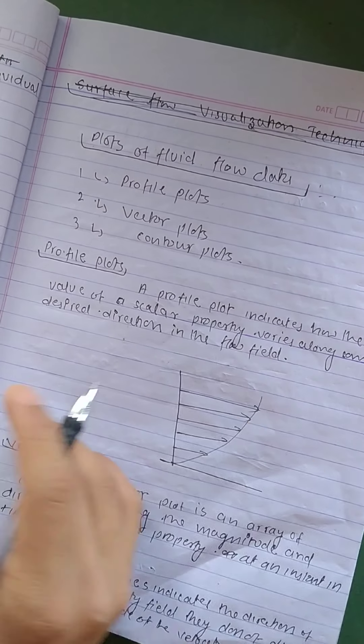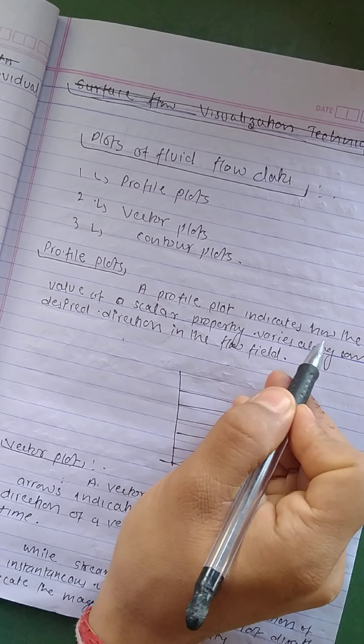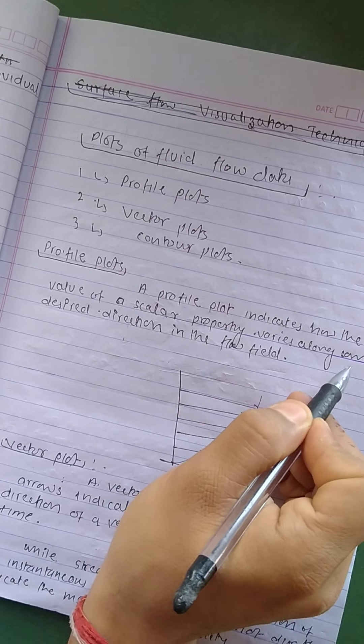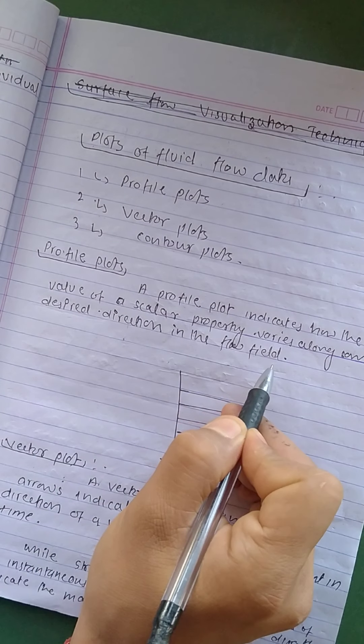So what is profile plots? A profile plot indicates how the values of scalar property varies along some desired direction in the flow field.